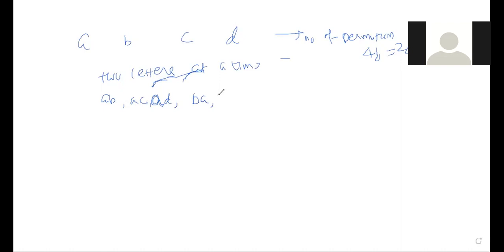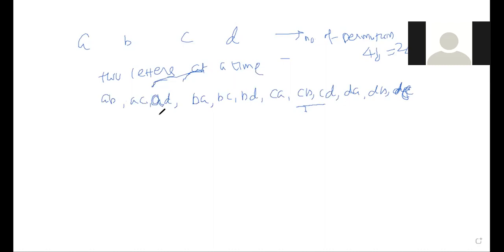Part (d): D and E will not serve together. We find the number of selections when D serves but not E. This is the start of the last sub-part where there is conflict between D and E — they refuse to work with each other — so we need to count arrangements excluding the case where both D and E are officers simultaneously.